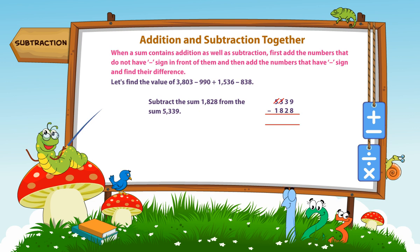Subtract the sum 1,828 from the sum 5,339. We get 3,511.